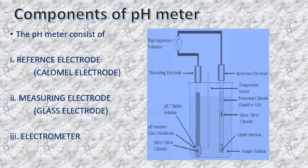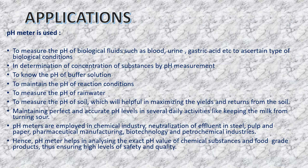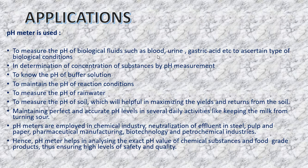We have covered the components of the pH meter, its working mechanism, and its principle. Moving to applications: the pH meter is important for measuring pH of biological fluids such as blood, urine, and gastric acids in biochemical tests. It can also determine the concentration of substances, and it helps in knowing and maintaining the pH of buffer solutions and reaction conditions.